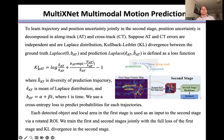This is the KL divergence along-track. We have the same formula for the cross-track. We use a cross-entropy loss to predict the probabilities for each trajectory.